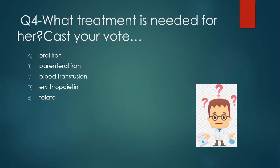What is the best treatment for this lady? The options are oral iron, parenteral iron, blood transfusion, erythropoietin, and folate. Oral iron is the best treatment. Parenteral iron is given only in patients who are unreliable, cannot tolerate oral iron, or have severe malabsorption. Blood transfusion is not indicated unless the patient has syncope, severe dyspnea on exertion, or blurred vision. Erythropoietin is not used for iron deficiency anemia, nor is folate.